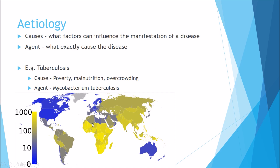Looking at this global distribution graph, areas in blue have low prevalence of TB, while yellower areas have higher case numbers. In developed countries such as Europe, North America and Australia, there's very little prevalence of TB. In contrast, southern and central Africa and across Asia have very high prevalences — this could be due to poverty, lack of technological development, malnutrition, and overcrowding. Places like India and China, with populations of over one billion, see high transmission because cough droplets from infected individuals are more likely to pass to others in close proximity.